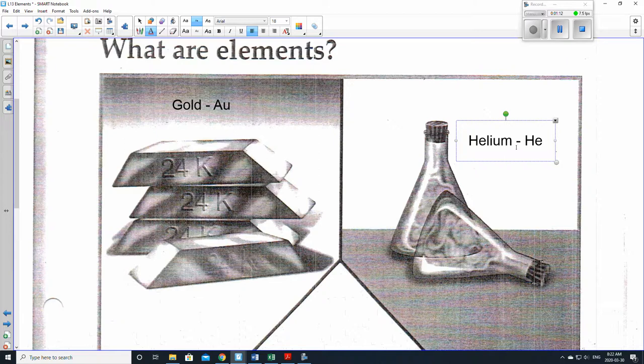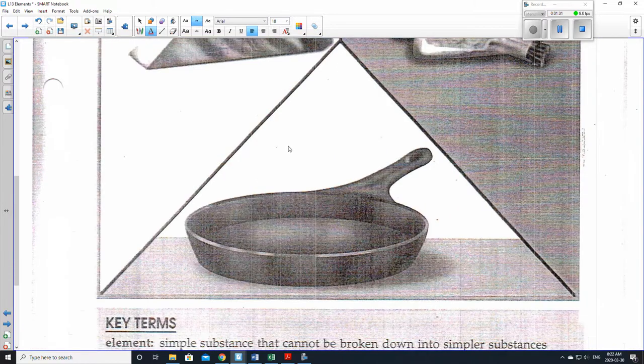You'll notice that the helium symbol actually totally matches up with the name for helium. Whereas gold, it has a symbol AU and it doesn't match up at all because it's taken from the Latin name. Lastly, over here, we have an iron pan, cast iron pan.